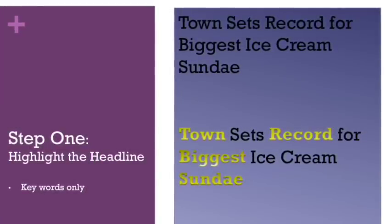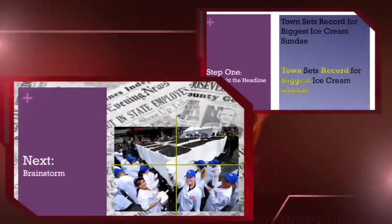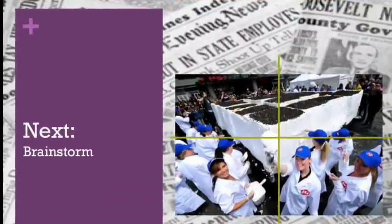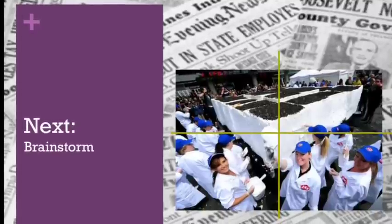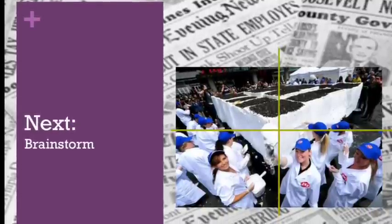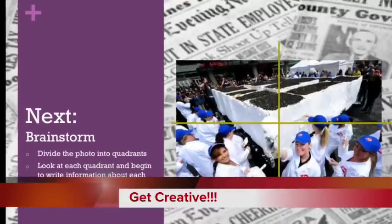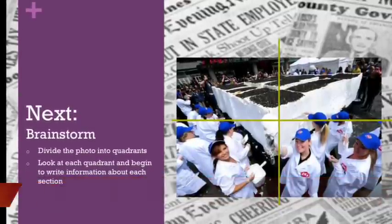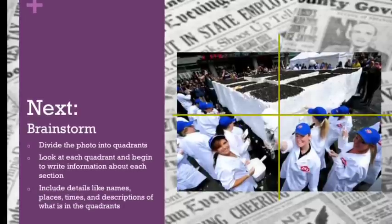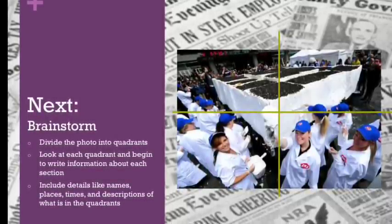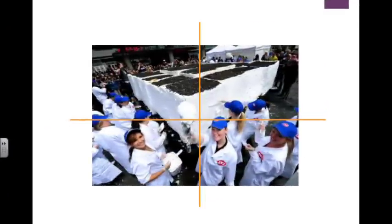The next thing you want to do is take a look at the photo. You're going to divide the photo into quadrants and then start to brainstorm about the details that you see in each quadrant, so that you will ensure your article matches both the headline and the photo. This is the time that you're going to get creative and start to make up all of the information that will add some interest to your story. Be sure to include details like names, places, dates, times, and descriptions of what's going on in the photo.